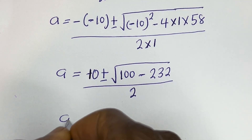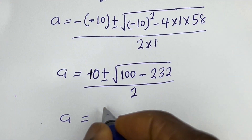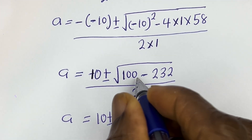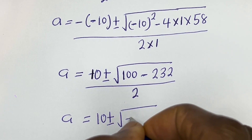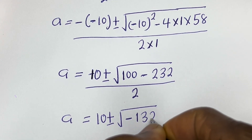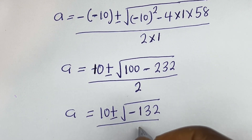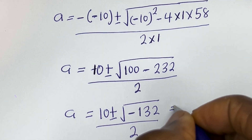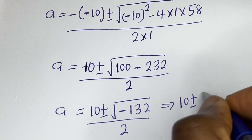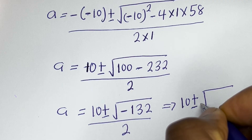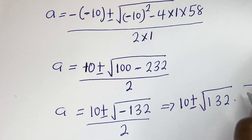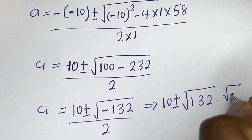Now a is equal to 10 plus or minus square root of 100 minus 232, which is minus 132, all over 2. And this becomes 10 plus or minus square root of minus 132, all over 2. We can write square root of minus 132 as square root of 132 multiplied by square root of minus 1.